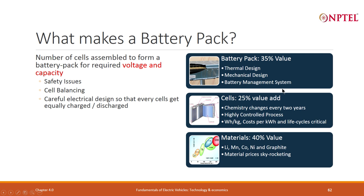The battery management system (BMS) will take care of safety and cell balancing, and finally there is the electrical design. Cells depend on the chemistry — whether pouch, cylindrical, or prismatic — and it is a highly controlled process. Key parameters are watt-hour per kg, cost per kilowatt-hour, and life cycles. Approximately 25 percent of cost comes from pack design, 25 percent from actual cell making, and 35 to 40 percent from raw materials.